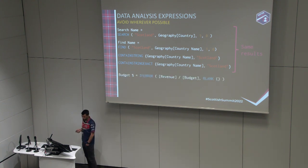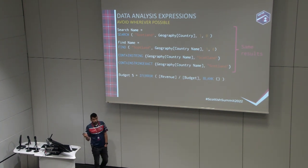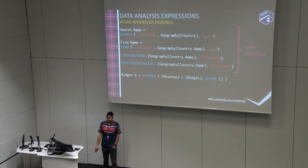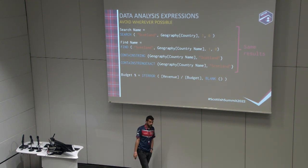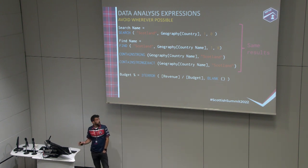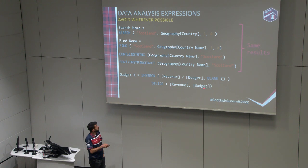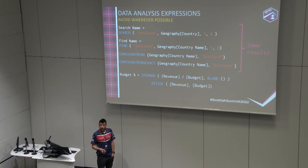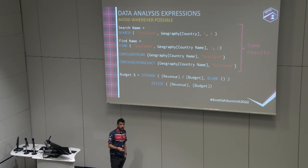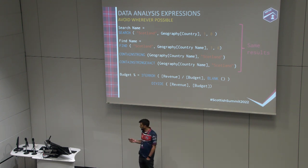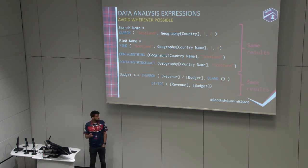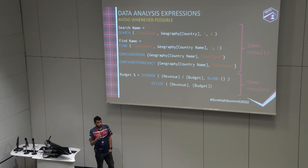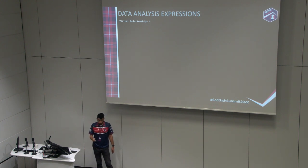The next common error coming from Excel is using something like IFERROR - searching for errors, dividing something, and returning BLANK if there's an error, while handling division by zero. Everybody uses it in Excel and it's perfectly fine, but the problem is it's super slow in DAX. You can do the same thing with DIVIDE, and DIVIDE has built-in error handling inside so you don't need to write IFERROR separately and then return BLANK on error. You'll get the same result but faster.